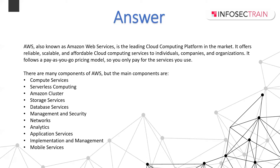The third component is Amazon Cluster. It is a logical grouping of tasks or services. Your tasks and services run on infrastructure that is registered to a cluster — an example is an ECS cluster. If you talk about storage services, storage is one of the best factors of using public cloud. You can store your data efficiently at lower prices. Examples are S3 (Simple Storage Service), Glacier, EFS, EBS, and Storage Gateway.